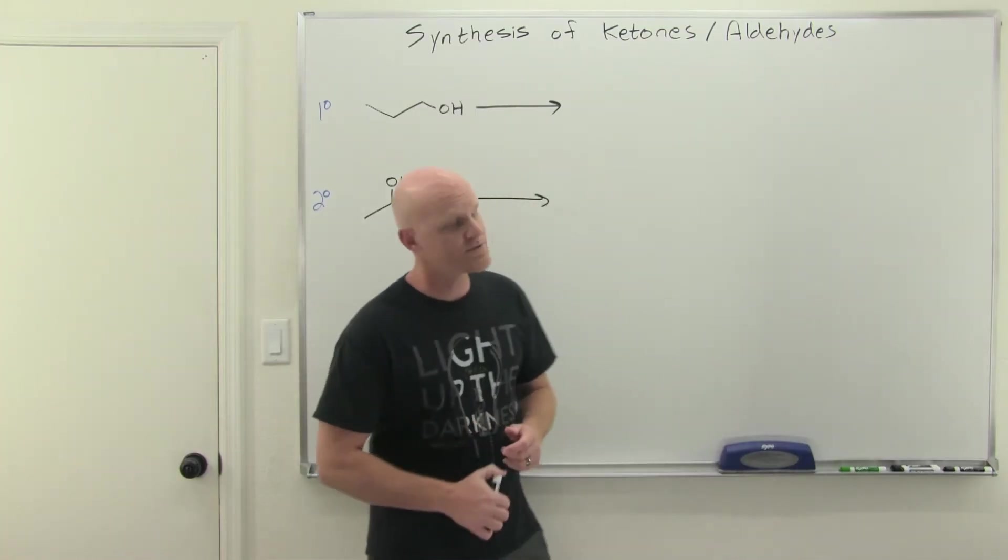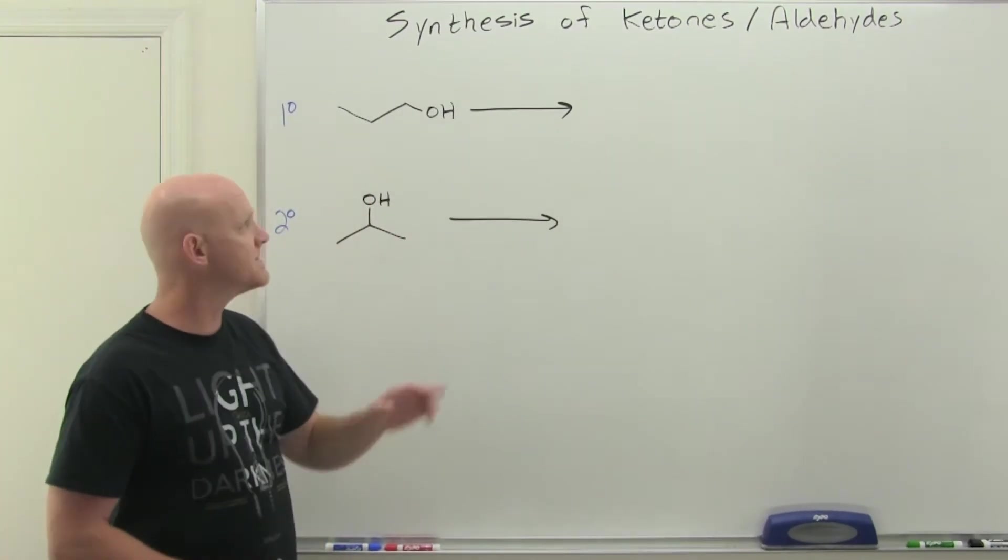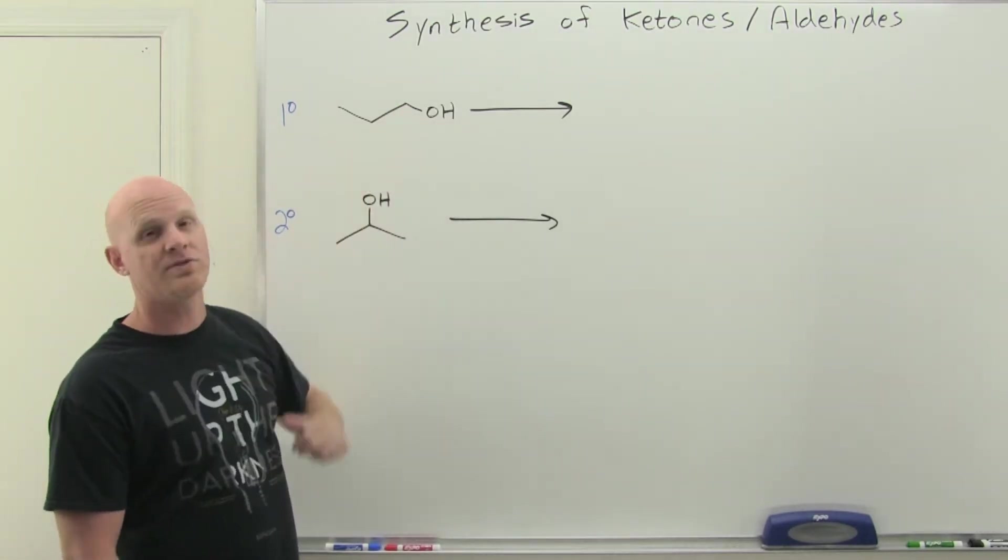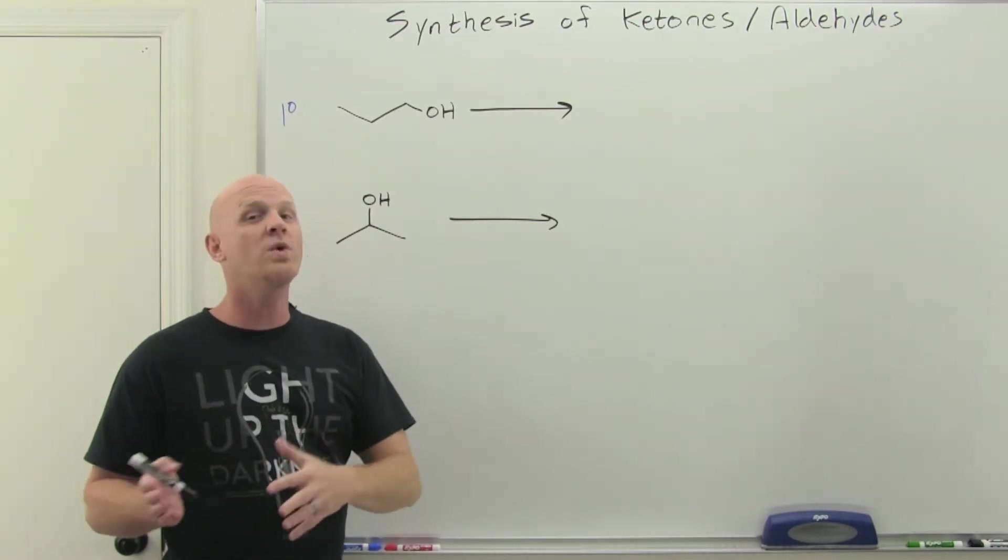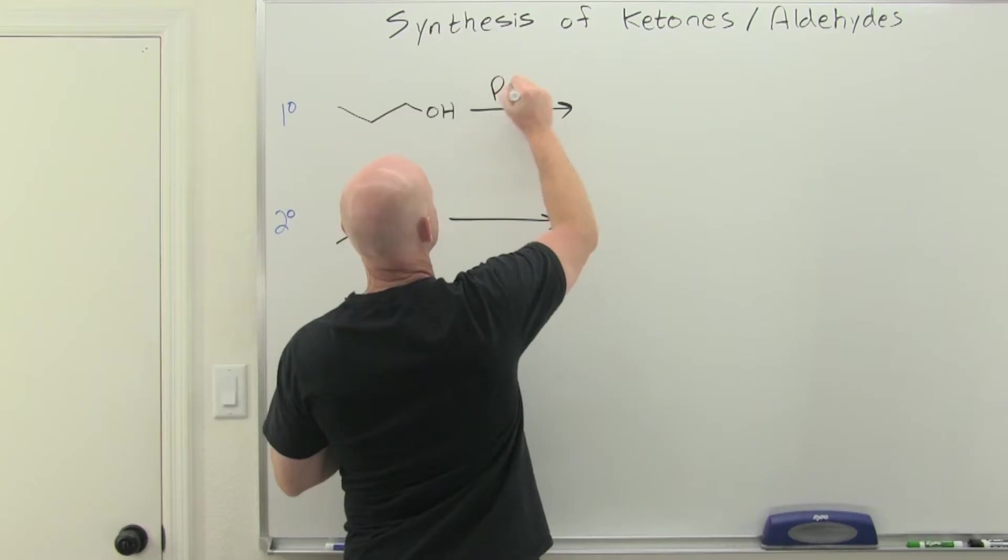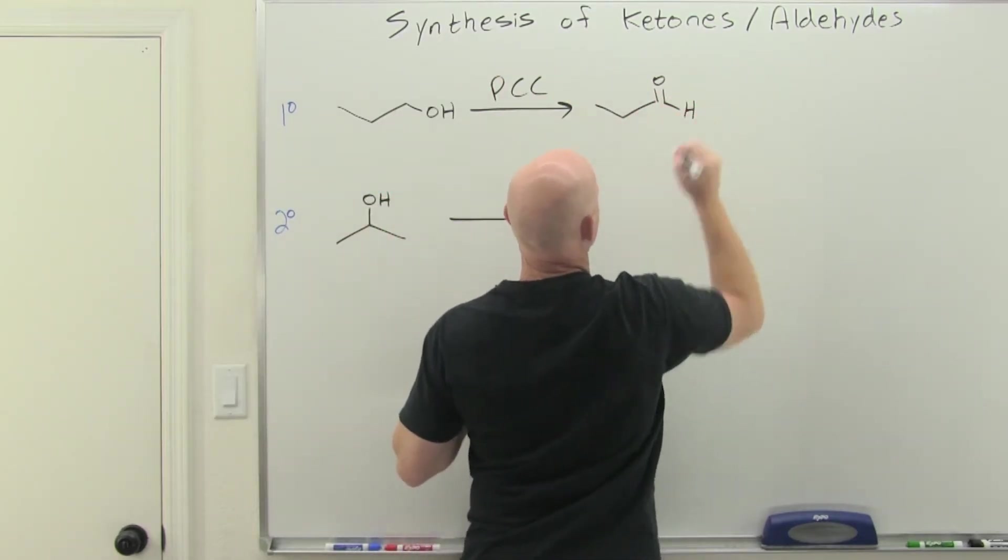Alright, so let's do a little review here. We'll start with the oxidation of alcohols. For primary alcohols, you learned that there are two hydrogens on the carbon with the hydroxyl group. As a result, primary alcohols can be oxidized either one or two steps. If you want to oxidize with just a single step, you're going to use PCC, and that will oxidize it to an aldehyde.